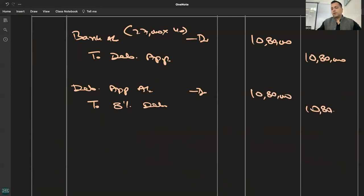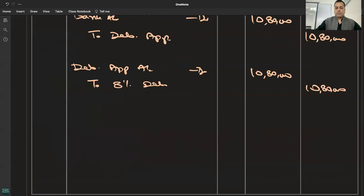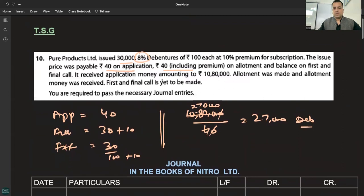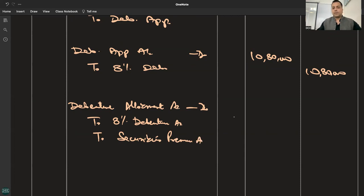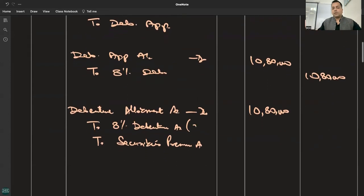Premium application - no entry here. Now carefully look at allotment money. What happened on allotment? Debenture allotment: how much allotment? 30 plus 10. Debenture allotment debited to 8% debentures, 27,000.